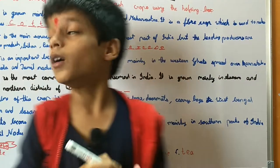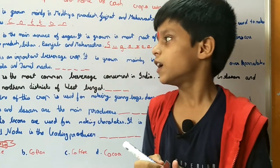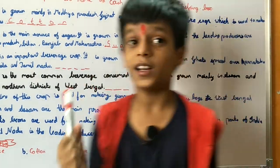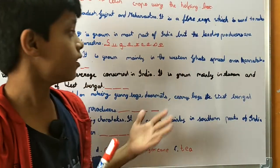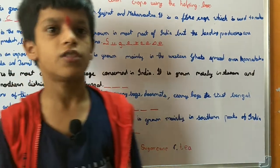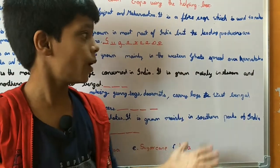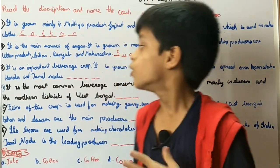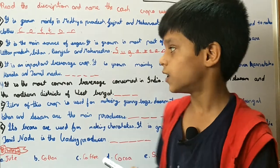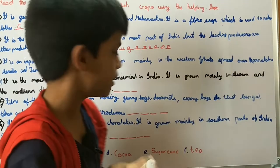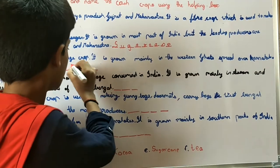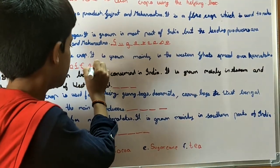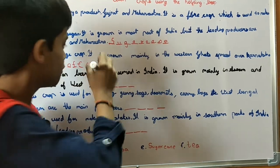Number 3: It is an important beverage crop. It is grown mainly in the Western Ghats that spread over Karnataka, Kerala and Tamil Nadu. So the answer is Coffee.